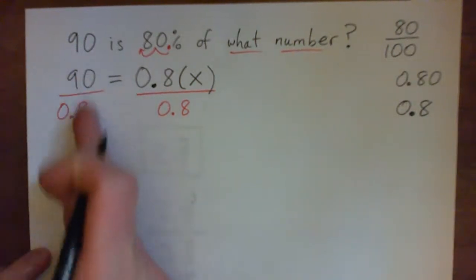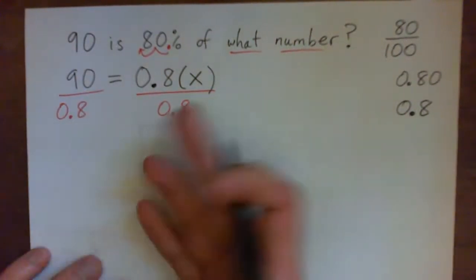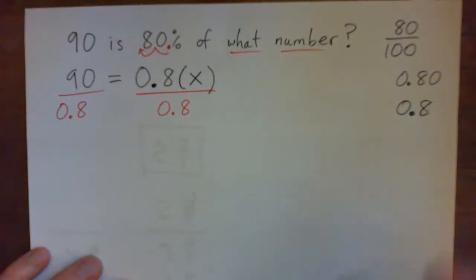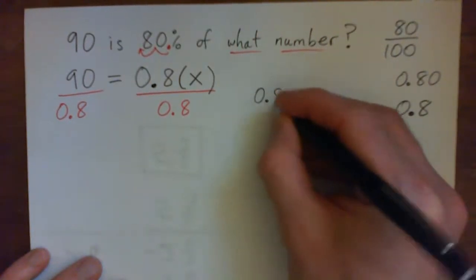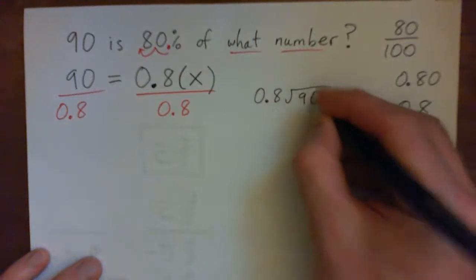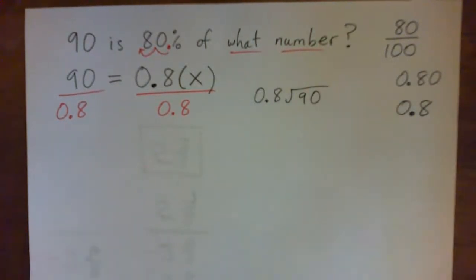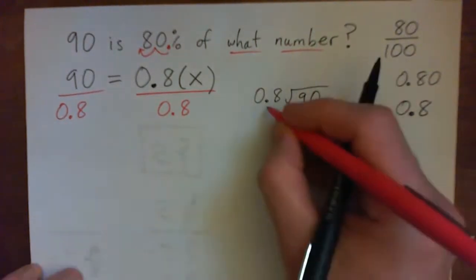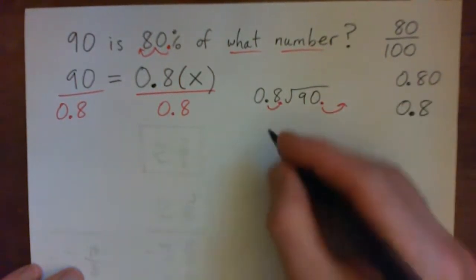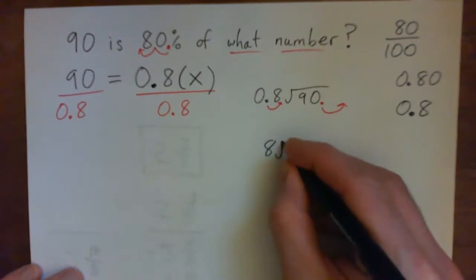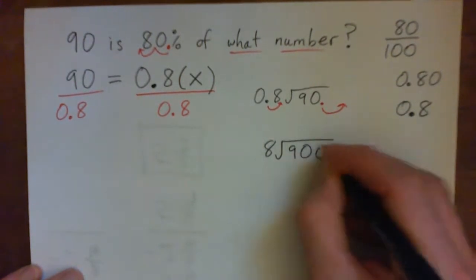And there are a number of ways of calculating this. If you have a calculator, you can do it. In this class, we're going to do it without a calculator. So, if I was doing 0.8 into 90, that's dividing decimals. Remember, with dividing decimals, you need to move this decimal point to the right. And also this one to the right to turn this into 8 into 900.